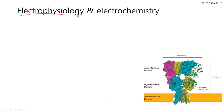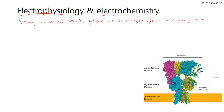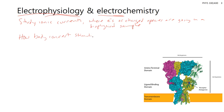When I use the terms electrophysiology and electrochemistry, it's all about studying ionic currents — where electrons or charged species are going in a sample. I would say electrophysiology is more specific to human health and body physiology. Electrophysiology is more concerned about how the body converts stimuli from outside sources to signals inside the body.